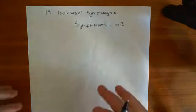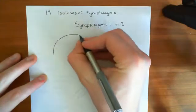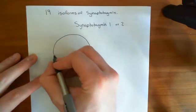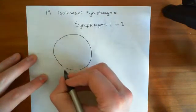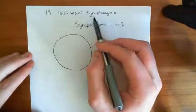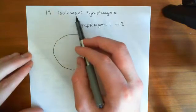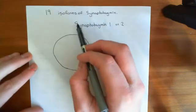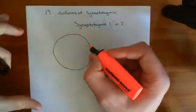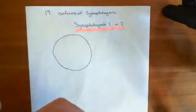Now we want to discuss the structure of these proteins. Let's say we have our synaptic vesicle here. Synaptotagmin 1 and synaptotagmin 2 are found in the membrane of these synaptic vesicles. It's worth stressing that some synaptotagmin isoforms aren't even capable of sensing calcium, so they're not all involved in neurotransmission. These two are the ones relevant to synaptic mechanisms.